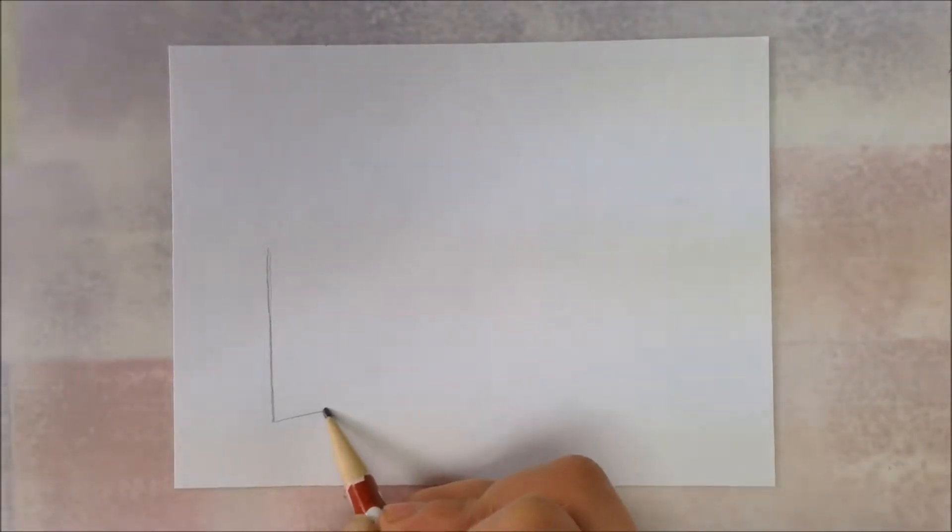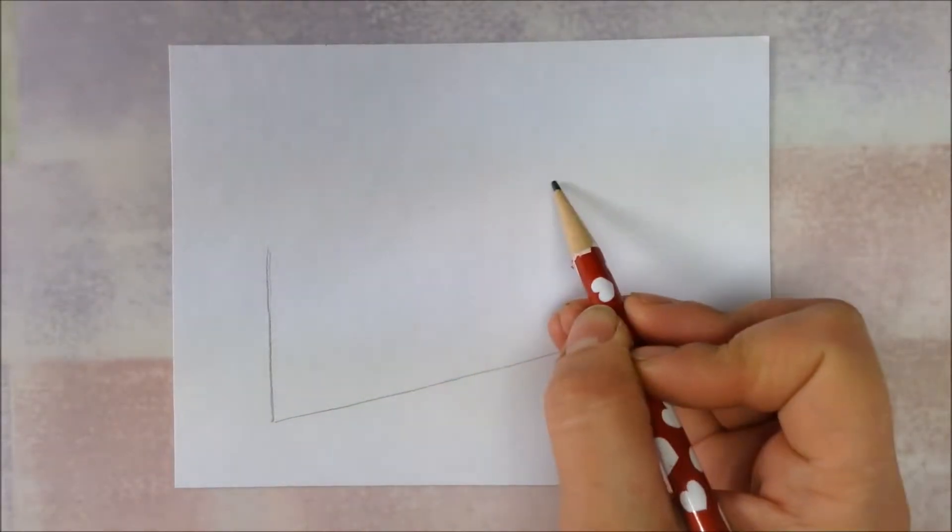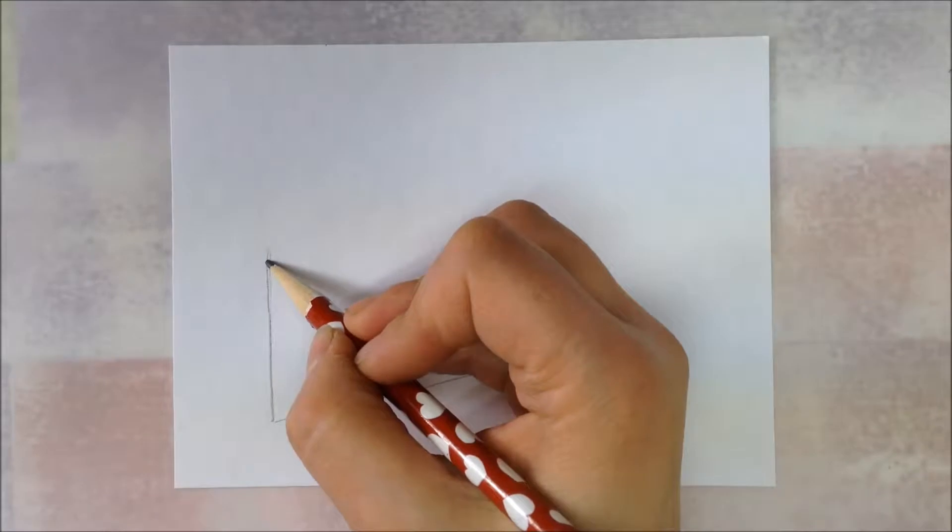On the bottom, we're going to draw a diagonal line. This will be how long or how wide our cake is going to be. We're going to have an imaginary line on the top to follow. You can draw it really lightly if you want.